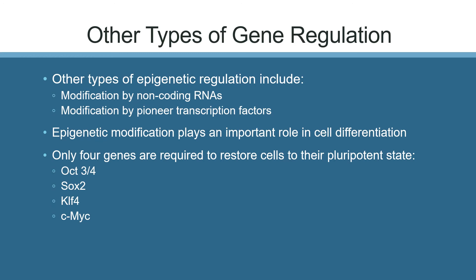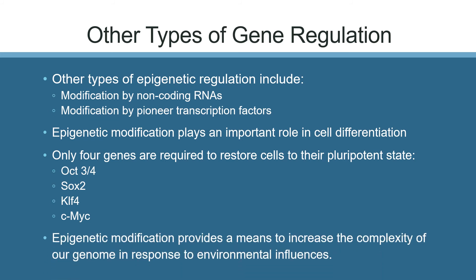These four genes are OCT3-4, SOX2, KLF4, and c-MYC. The discovery that only four genes were needed to restore pluripotency was really exciting. Epigenetic modification provides a means to increase the complexity of our genome in response to environmental influences. In the videos that comprise the rest of this lesson, you'll get more detail on each of the things discussed in this overview, and some information you can use for your module project.